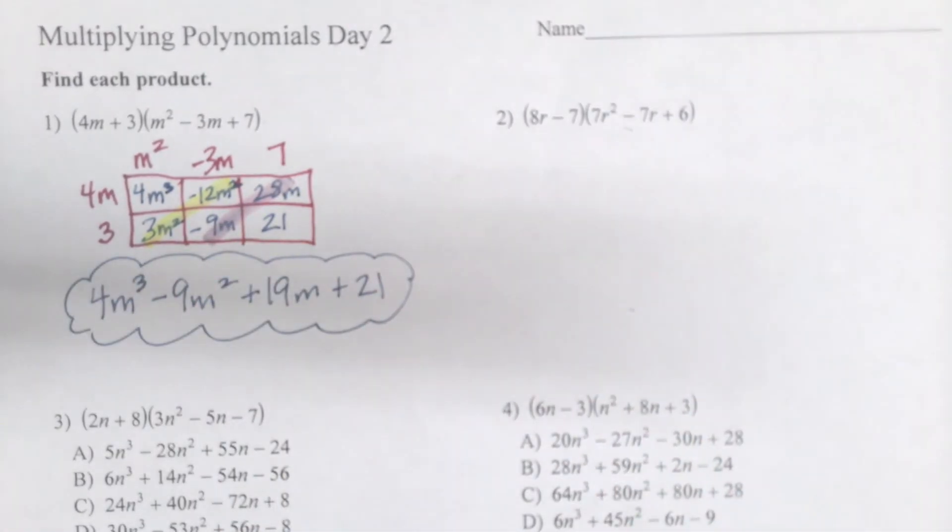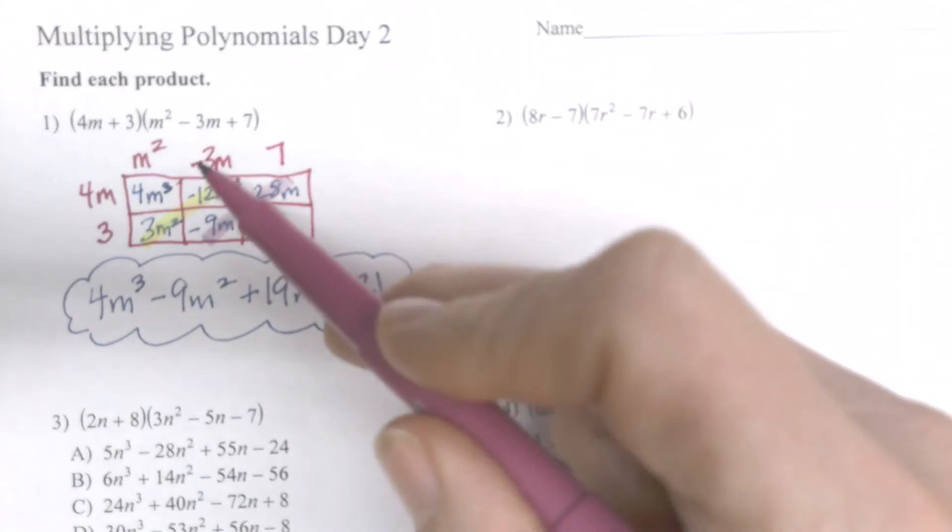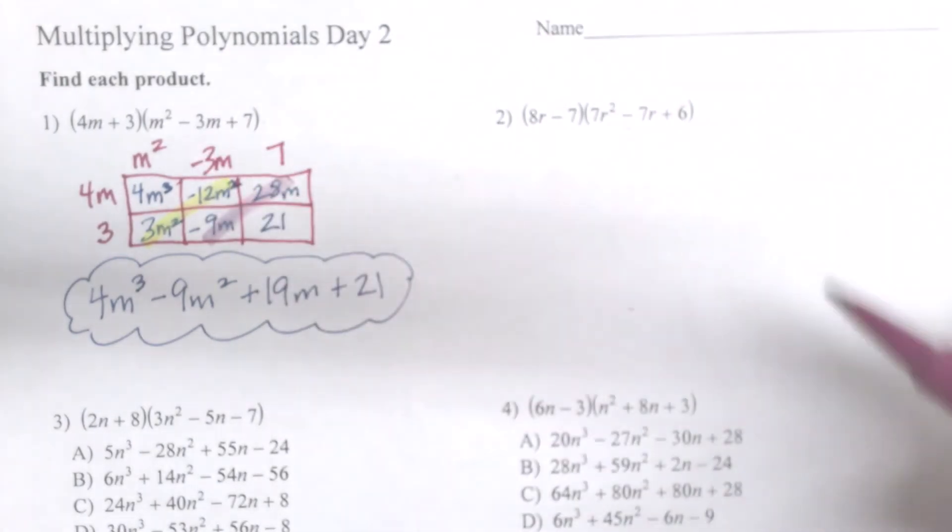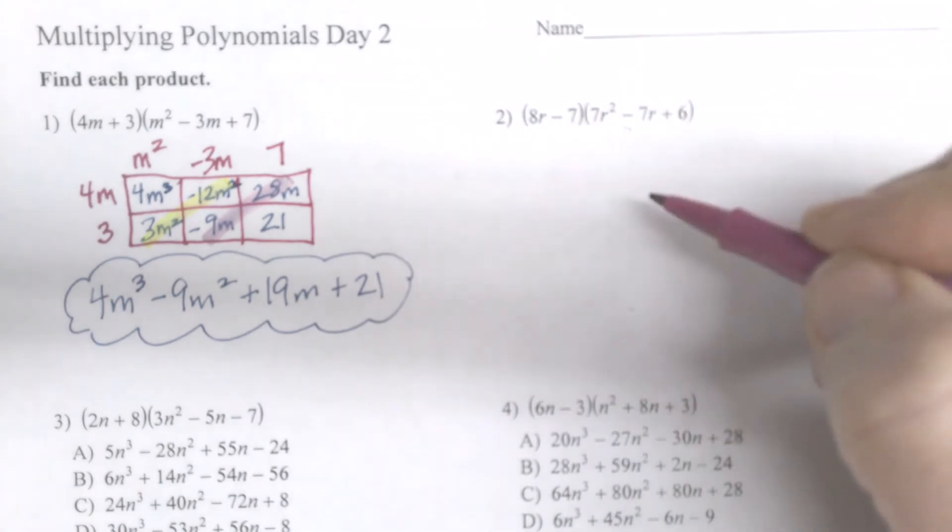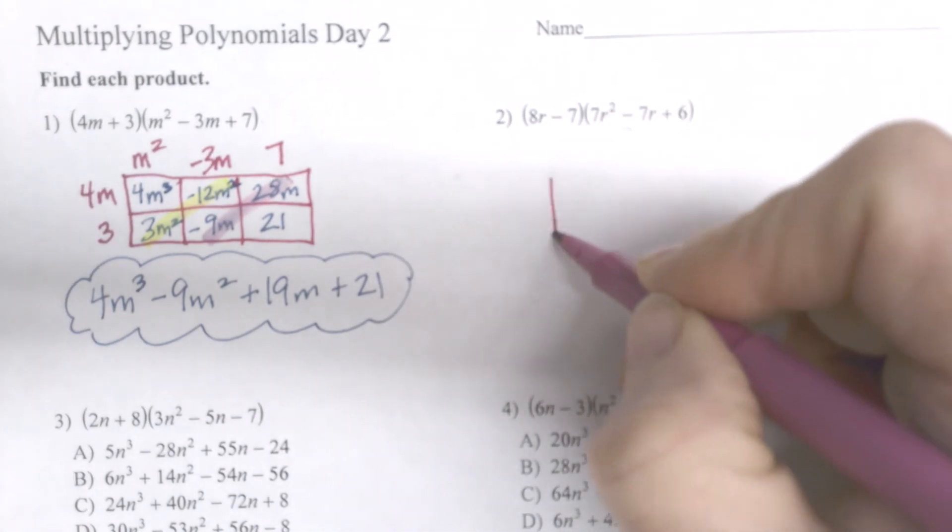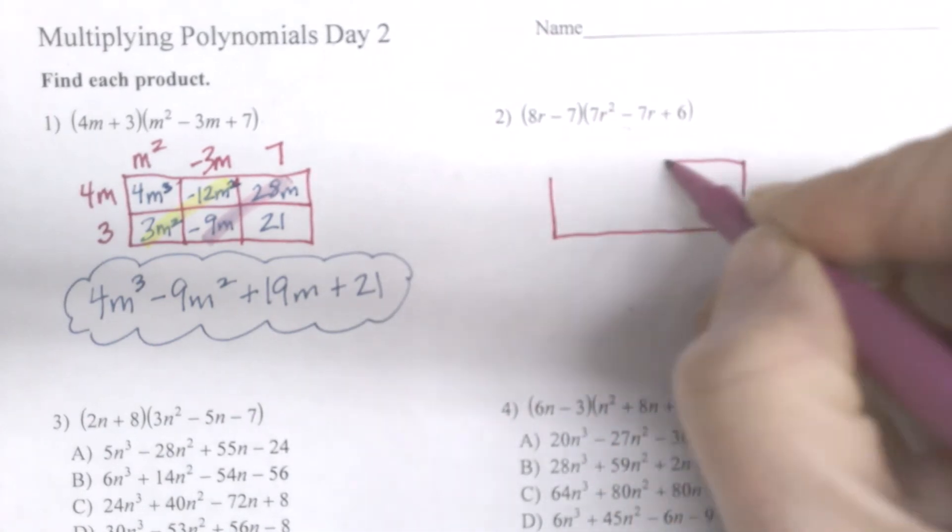Now you don't have to use the box method, I just think it's kind of a nice way to do it. And I'm going to do that again for this one, especially if you have more or bigger polynomials. So again, I'm going to do two by three, and in fact, all the rest of yours are going to be two by three. So I'll make my two by three box.